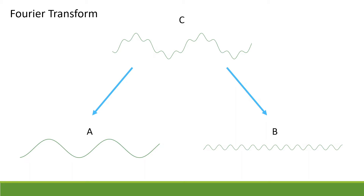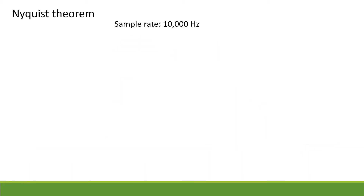So we feed in a complicated looking wave and it spits out the frequencies that it contains, and importantly also the amount of each frequency that is present. If we feed an audio signal into an FFT we can find out the relative strengths of the various frequencies, which is perfect for making a spectrum analyzer or VU meter. In order to do this we need to use the ADC to sample the audio at a high frequency — but how fast do we need to sample?